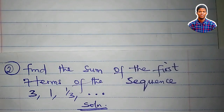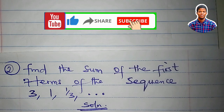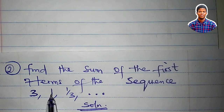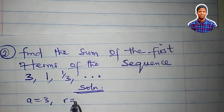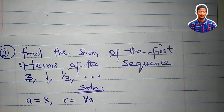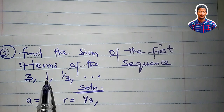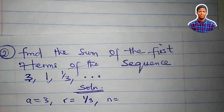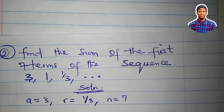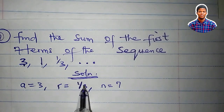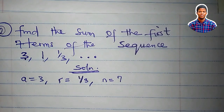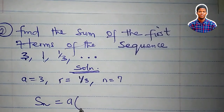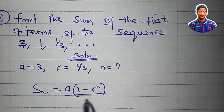Now for the second question: find the sum of the first seven terms of the sequence 3, 1, 1/3, ... The first term a = 3. The common ratio r = 1/3 (second term divided by first term: 1/3; confirmed by third term divided by second term: also 1/3). n = 7. Since r = 1/3 is less than 1, we use Formula 1: S_n = a(1 - r^n)/(1 - r).